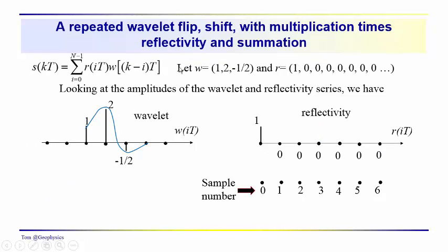Now we're going to convolve that simple wavelet with the simplest reflectivity series, which consists of a single reflection coefficient. The reflectivity series has a single reflection coefficient at time zero, sample number zero, and all other samples are equal to zero. Going back to the earlier display, we know this process should give us the wavelet suspended from and scaled by the amplitude of this reflection coefficient — we should just see the wavelet repeated with the same amplitude.